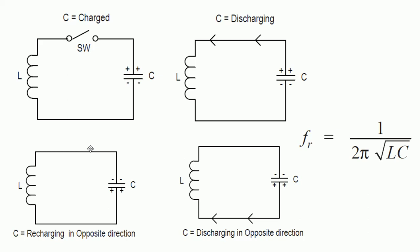The frequency of the tuned circuit is given by the equation: f = 1 / (2π√LC). From this equation, frequency is inversely proportional to the inductance and capacitance. A larger capacitor takes more time to fully charge and discharge, and the same applies to a larger inductor, so the time period increases and the frequency decreases. This is why frequency is inversely proportional to the values of capacitance and inductance.